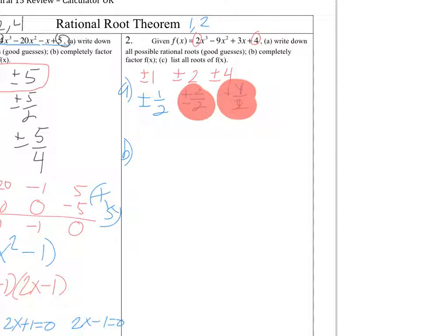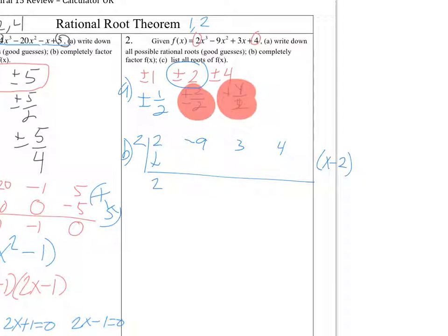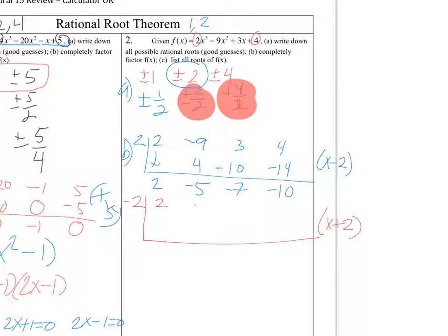Part B is the factoring. In setting up my synthetic division, I tend to like trying middle numbers first. I'll try 2, which means x minus 2 is my factor. So 2, negative 9, 3, and 4 — nothing missing in my terms. Bring the 2 down. 2 times 2 is 4, negative 9 plus 4 is negative 5, we get negative 10. 3 plus negative 10 is negative 7. Negative 14 and negative 10. That one did not work. I'm going to try negative 2, so x plus 2 would be my factor. 2, negative 9, 3, 4. Bring down the 2. Negative 2 times 2 is negative 4. We get negative 13, that's going to be positive 26, then 29. This is definitely not going to work.